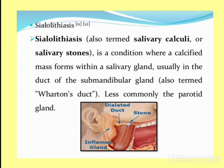Sialolithiasis, also known as salivary calculi or salivary stones, is a condition where a calcified mass forms within the salivary gland, usually in the duct of the submandibular gland — also known as Wharton's duct — and less commonly in the parotid.